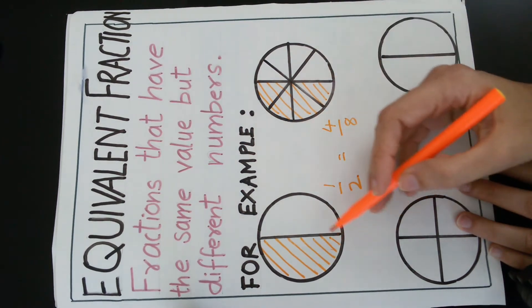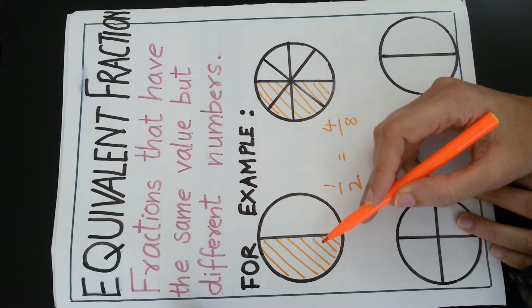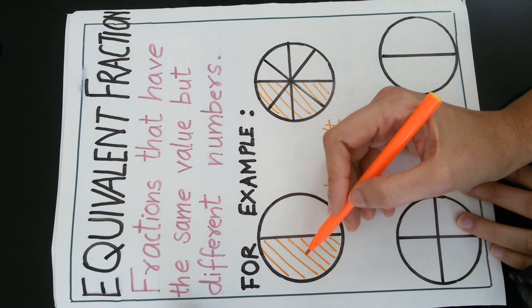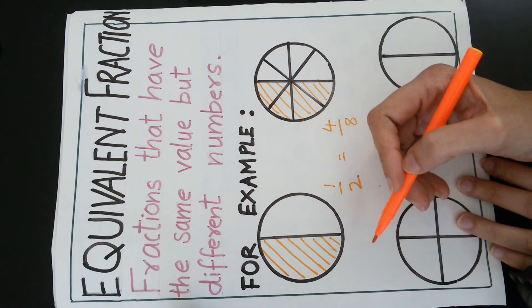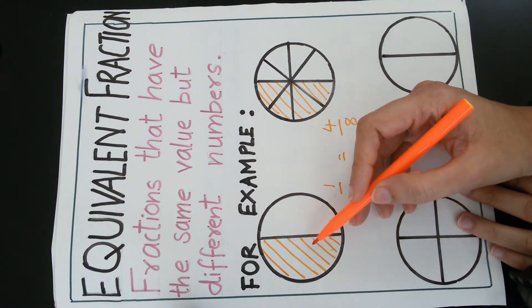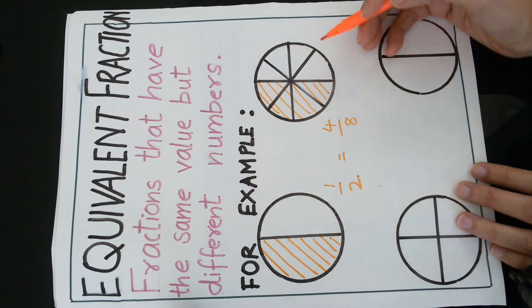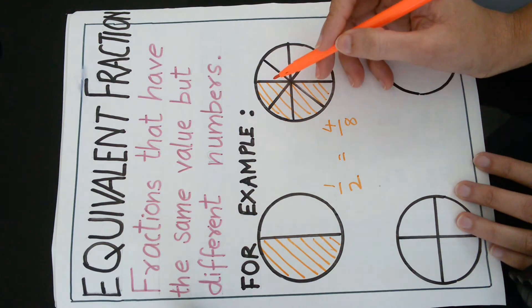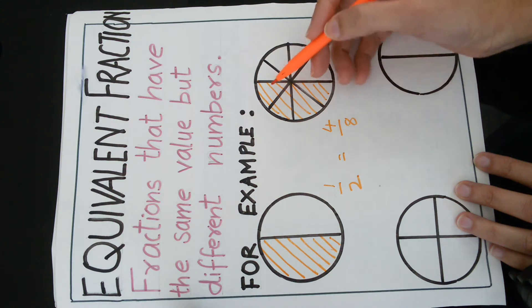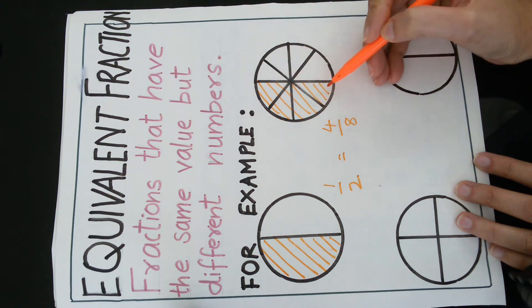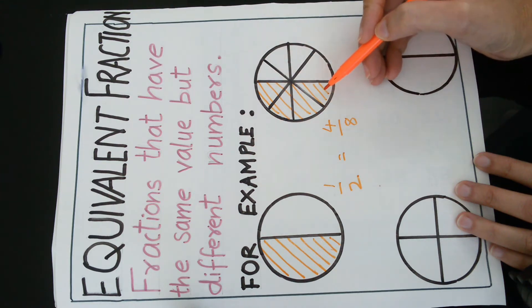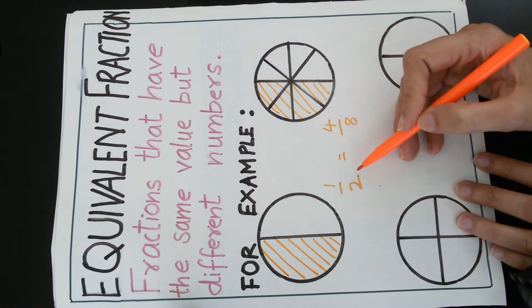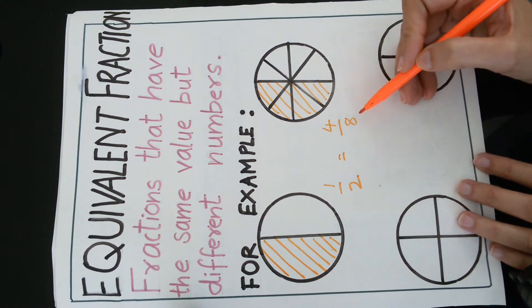I will explain this again with the help of the story of a pizza. This is a pizza having 2 pieces. If I ate 1 piece of pizza, that means I ate half of the pizza. Similarly, this is a pizza having 8 pieces. If I ate 4 pieces, it means I have eaten the same half of the pizza. So 1 upon 2 is equal to 4 upon 8.